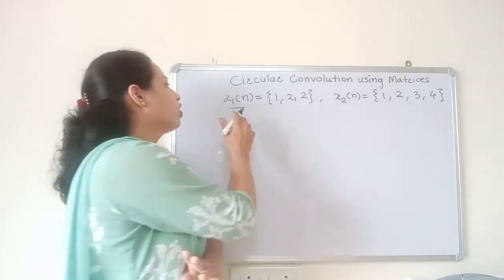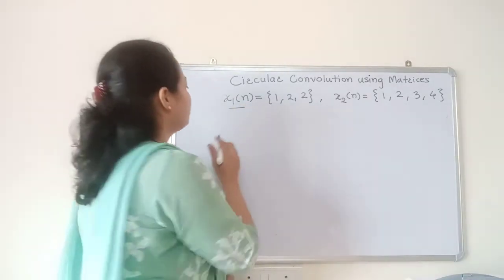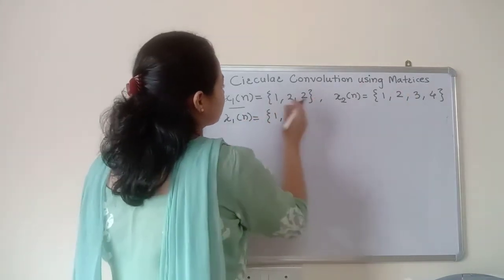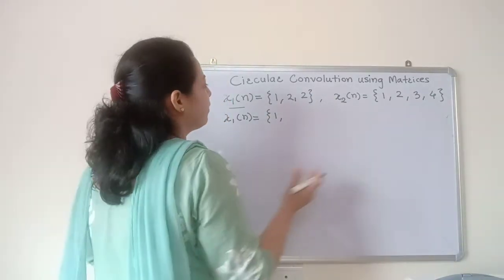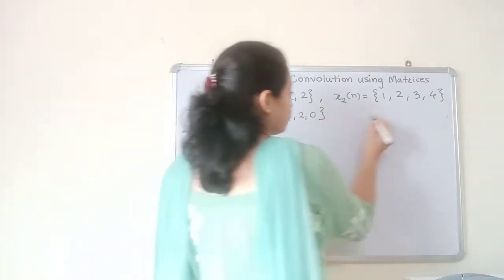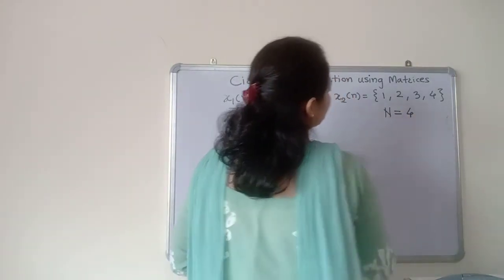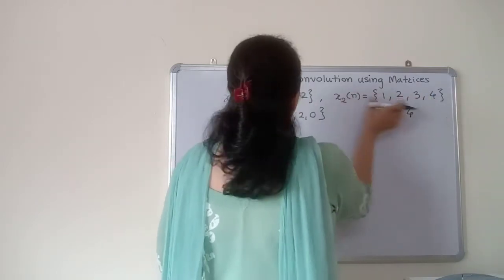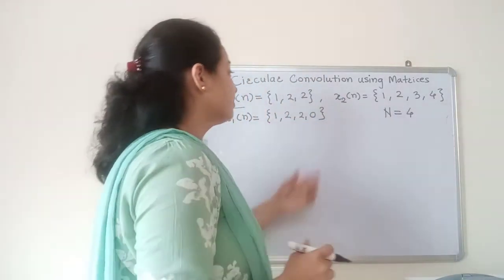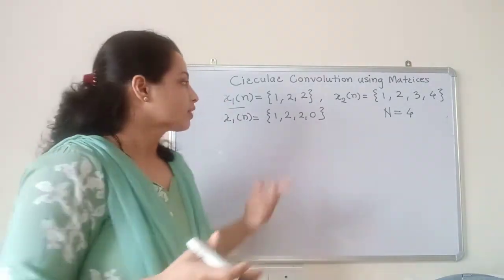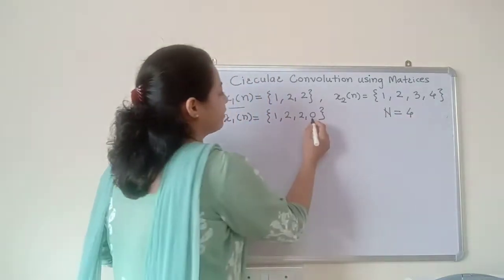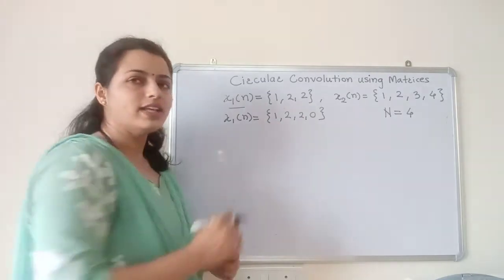We have to make the length of x1 of n equal to 4. The rest of the samples of the sequence are 0, so we will pad one zero here. Now the length is equal to 4. For this example, capital N has value 4 because the maximum number of samples in any of these sequences is equal to 4. If the maximum length was equal to 5 then we would need to add two zeros. This is called zero padding.